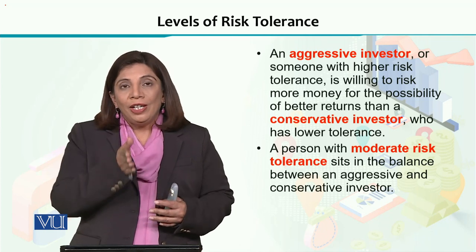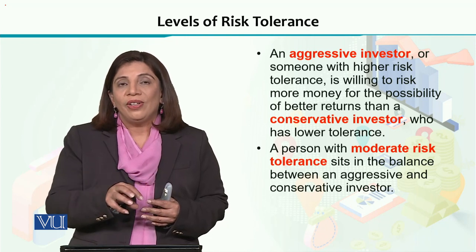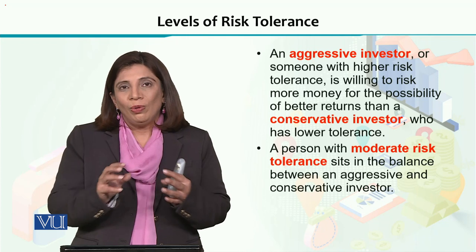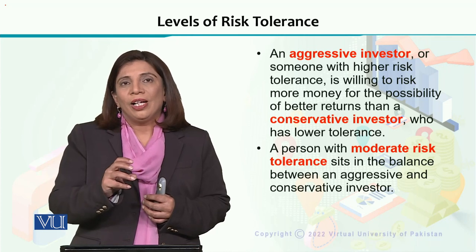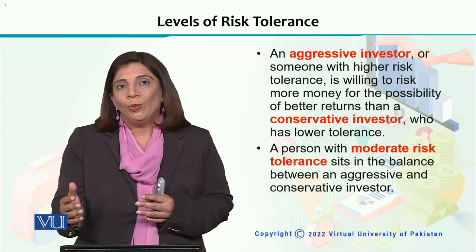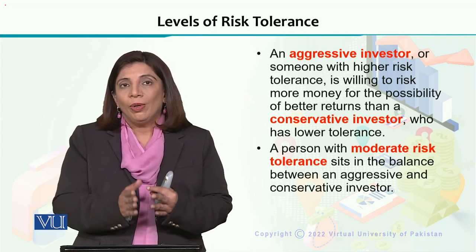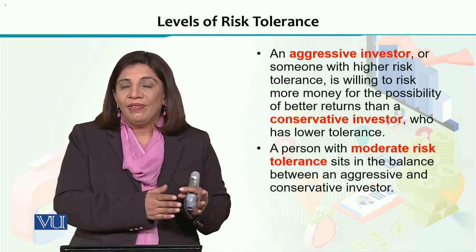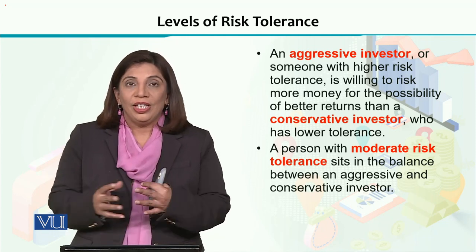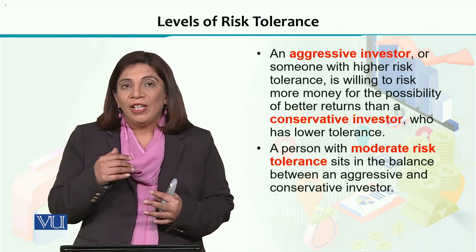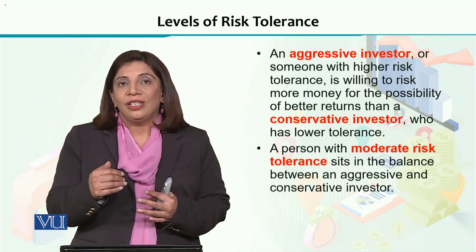In between, we can have investors who are ready to go for moderate risk — moderate risk investors. They invest in those particular opportunities where moderate risk is linked, neither very low nor very high. This third category falls somewhere in the middle and is known as moderate risk investors. So the three categories are aggressive investors, moderate risk investors, and conservative investors, classified on the basis of their level of financial risk tolerance.